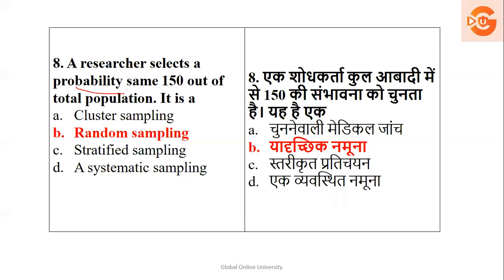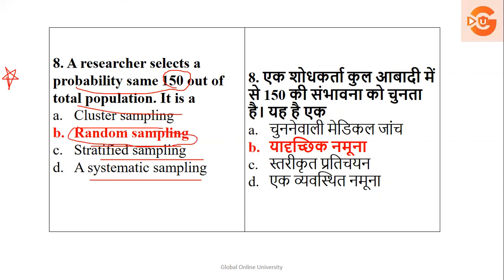A researcher selects 150 out of the total population. What type of probability sampling is this — cluster, random, stratified, or systematic? In the first lecture, probability and non-probability sampling techniques were covered. This is obviously random sampling — selecting 150 out of the total population by simply picking them up. So the answer is option B, random sampling.